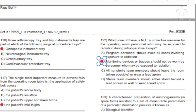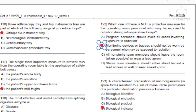Question 116: Knee arthroscopy tray and hip instruments tray are part of which of the following surgical procedure trays? A) Orthopedic instrument tray. B) Neurosurgical instrument tray. C) Genitourinary tray. D) Cardiovascular procedure tray. Answer: A, orthopedic instrument tray.